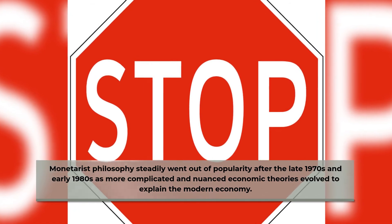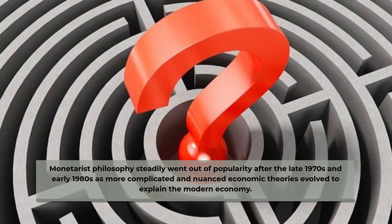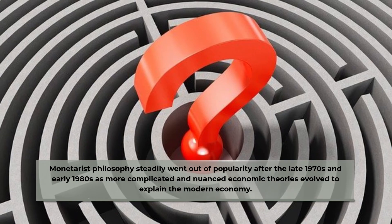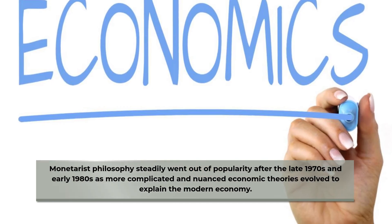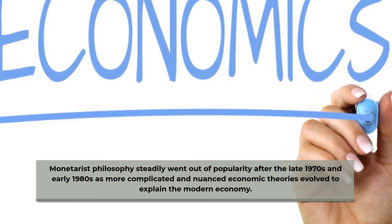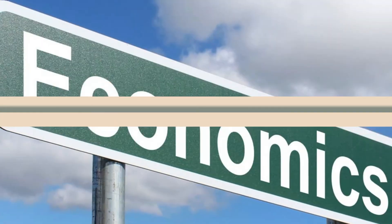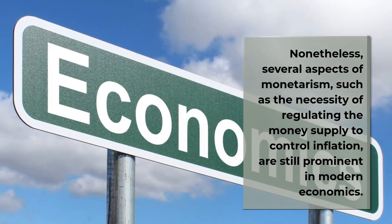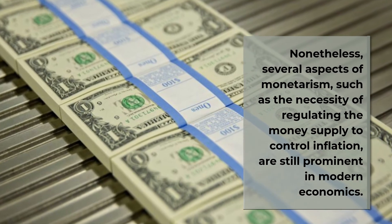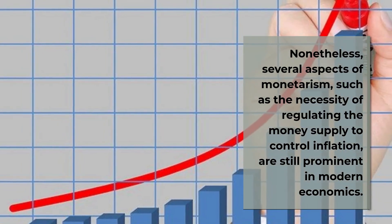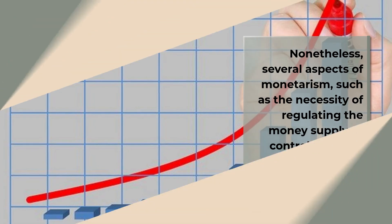Monetarist philosophy steadily went out of popularity after the late 1970s and early 1980s, as more complicated and nuanced economic theories evolved to explain the modern economy. Nonetheless, several aspects of monetarism, such as the necessity of regulating the money supply to control inflation, are still prominent in modern economics.